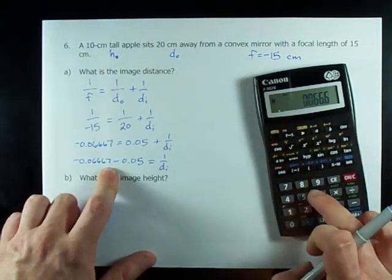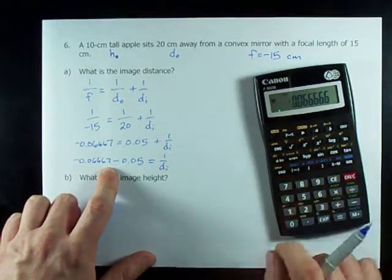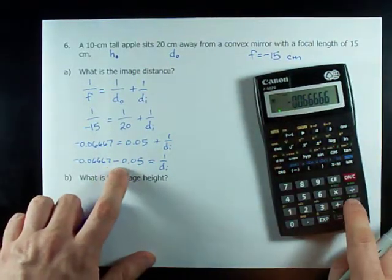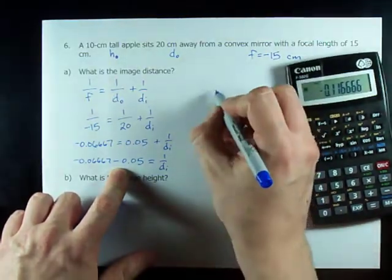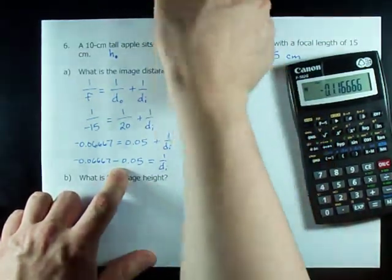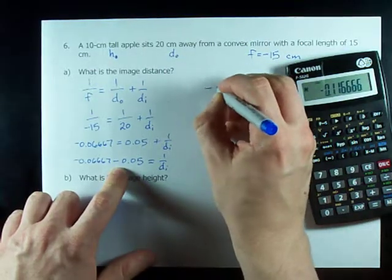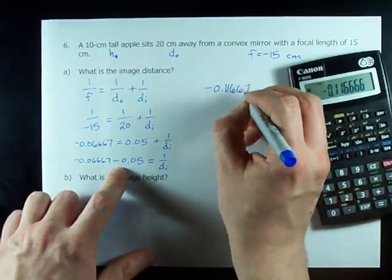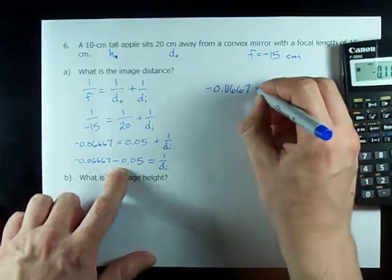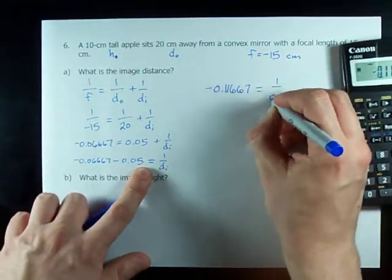And I can do that on my calculator as well. 0.06666, negative, minus 0.05 gives me negative 0.11667. And apparently that's my 1 over d_i.